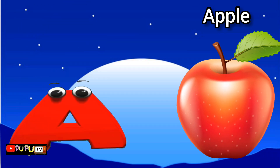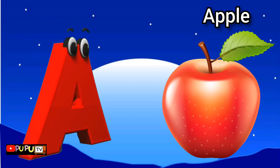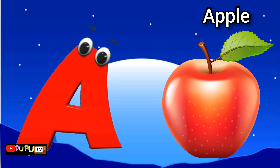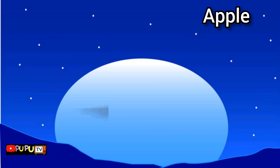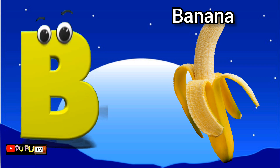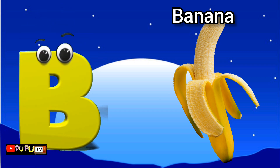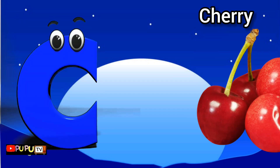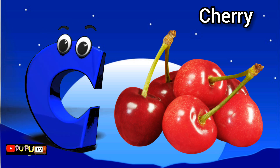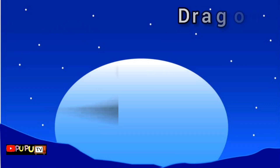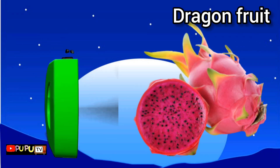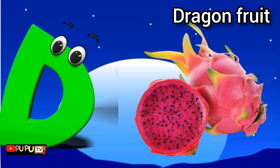A is for apple, a-a-apple. B is for banana, b-b-banana. C is for cherry, c-c-cherry. D is for dragon fruit, d-d, dragon fruit.